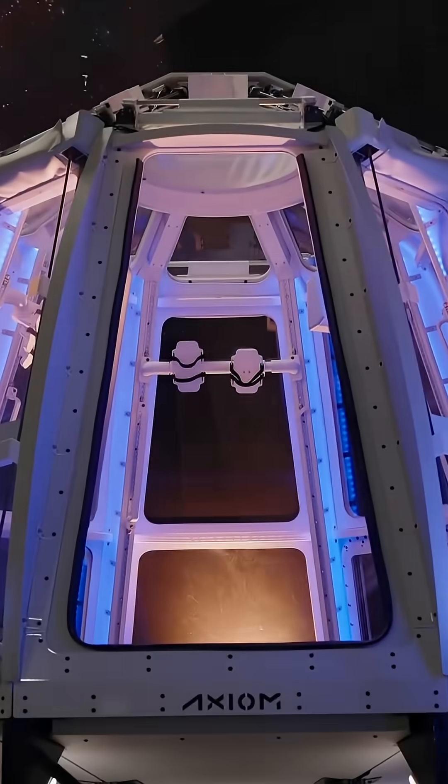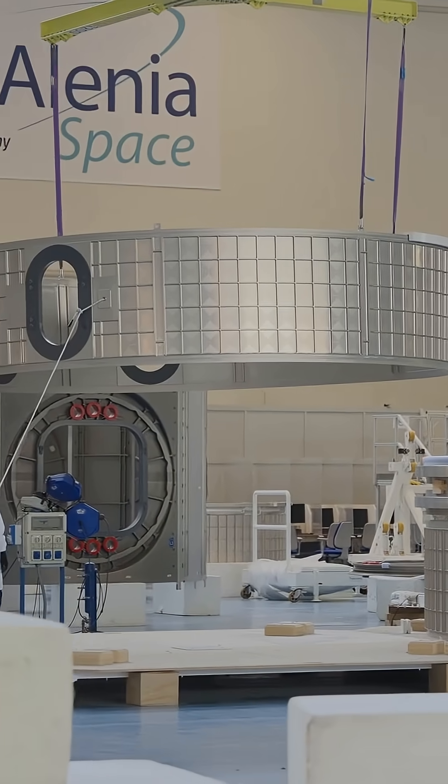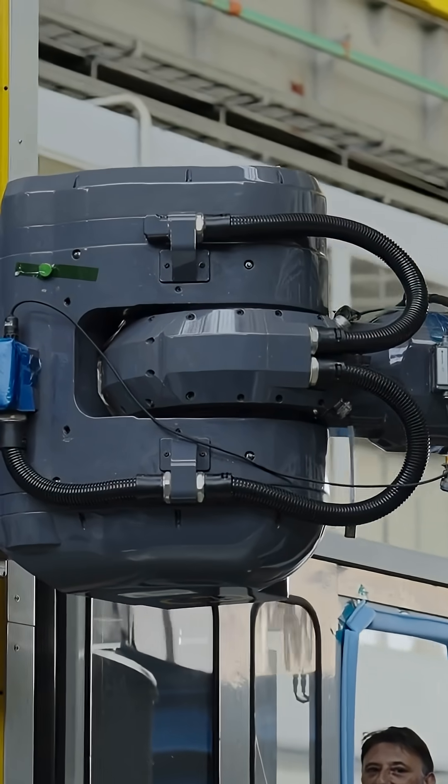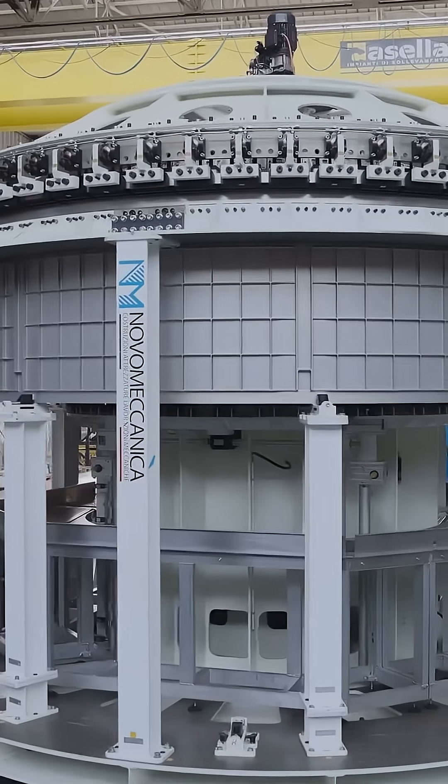In Houston, Axiom Space is racing to build the first private station. Its modules will first attach to the ISS around 2027, then detach to fly independently before the ISS is deorbited.